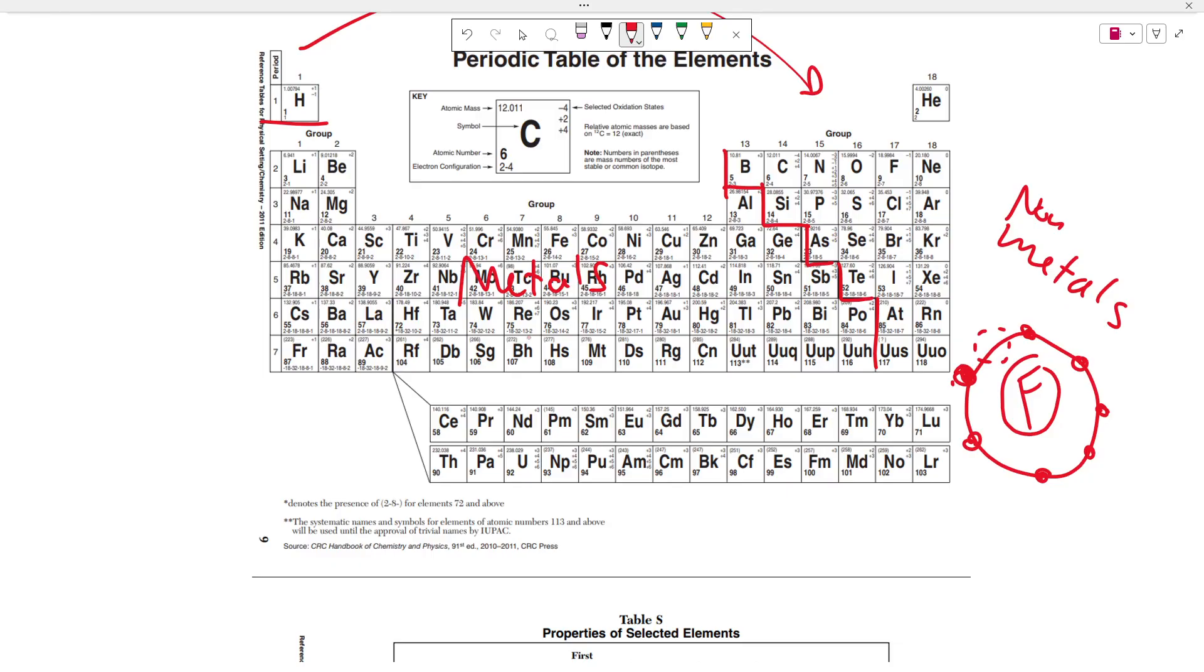Metals, on the other hand, tend to lose electrons because they have a lower amount of electrons in their valence shell.